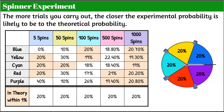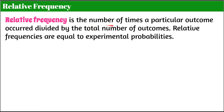The more trials you carry out, the closer your experimental probability is likely to be to the theoretical probability. Because this is true, we're going to learn about relative frequency. Relative frequency is the number of times a particular outcome occurred divided by the total number of outcomes. Relative frequencies are equal to experimental probabilities. This means we use theoretical probability as the expected outcome when conducting an experiment many times.